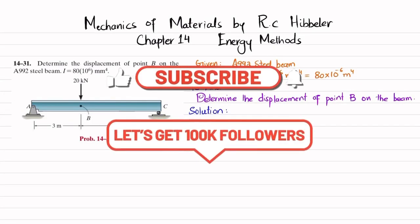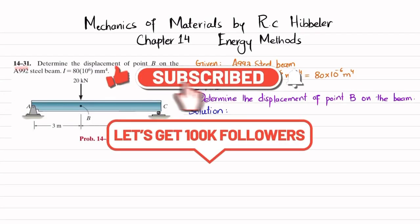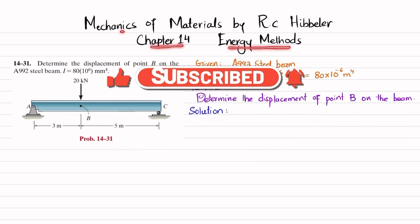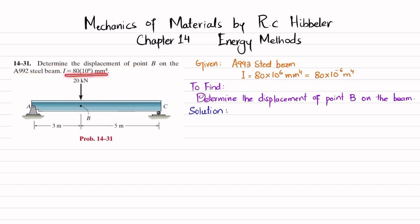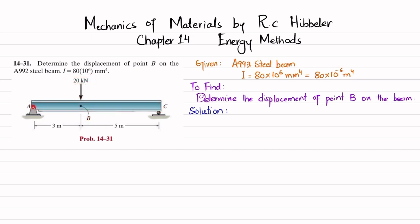Welcome back. In this video we are going to solve problem 14-31, taken from chapter 14 on energy methods in the book Mechanics of Materials by RC Hibbeler. The problem states: determine the displacement of point B on the A992 steel beam, where I is 80×10⁶ mm⁴. This is a simply supported beam with a 20 kN point load at point B, a pin support at A, and a roller support at C. We need to find the vertical displacement of point B.